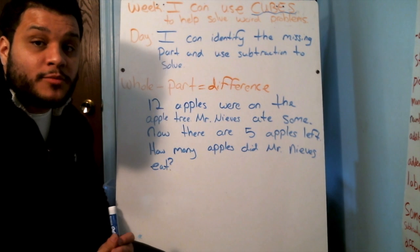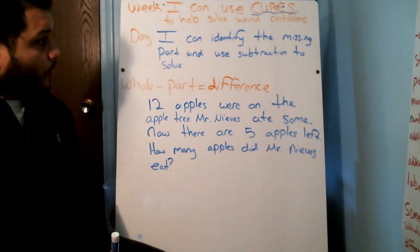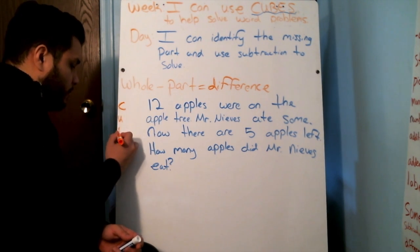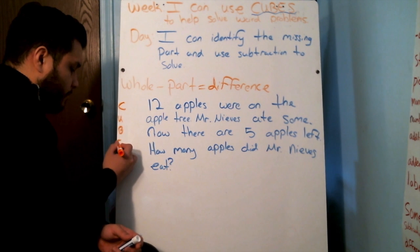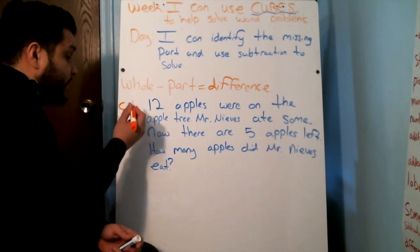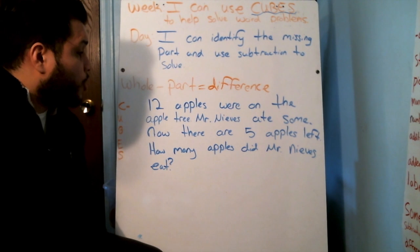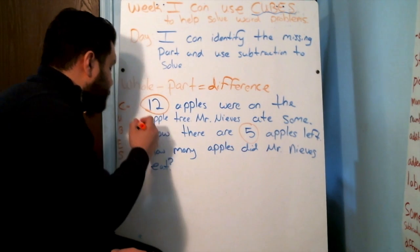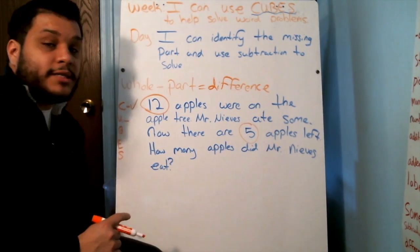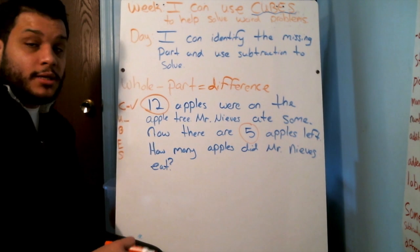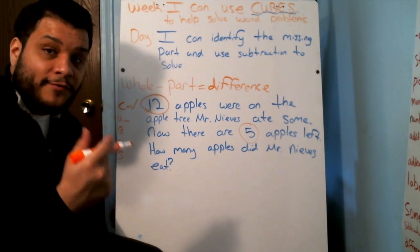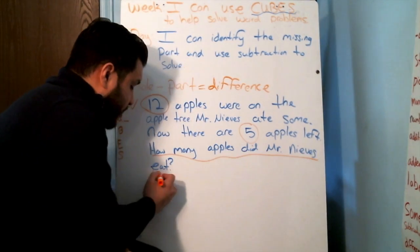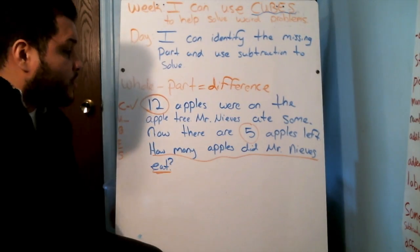Our word problems, we are always going to take that same first step, which is using cubes. C stands for circle the numbers. So I see a number 12 and I see a number 5. U stands for underline the question. I'm going to look for the question mark and for the question word. How is a question word. And my question mark is there. How many apples did Mr. Nieves eat?